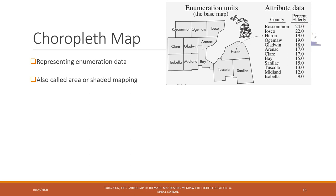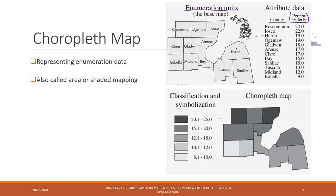Here we have enumeration units — it might be different counties. We also have those attribute data, which are numbers in this case. We just use different colors to represent the range of those numbers. That is the choropleth map.